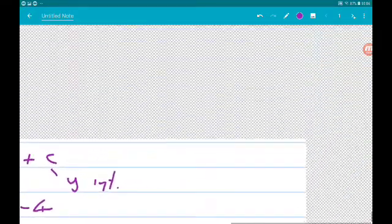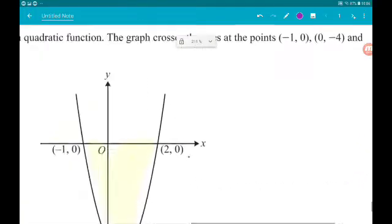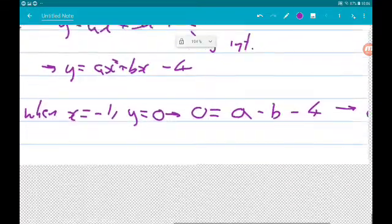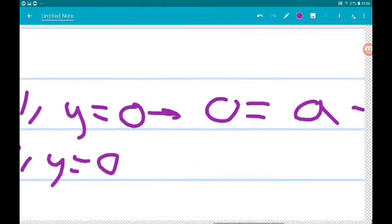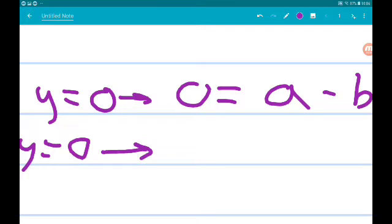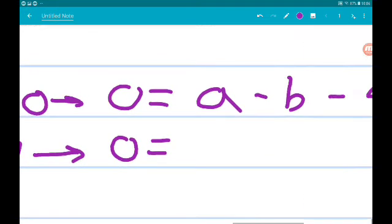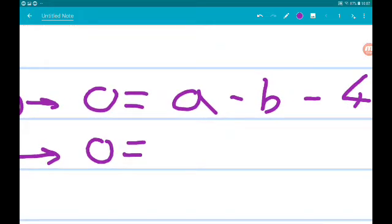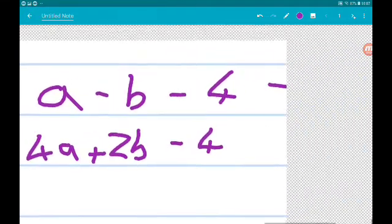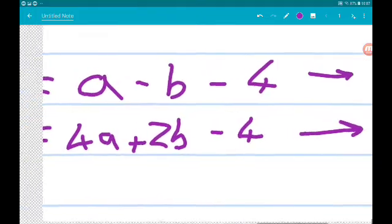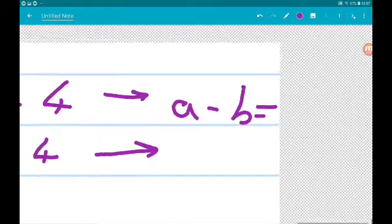Okay, so if we do that with the other x-intercept, we know that when x is 2, y is 0. That gives us 0 equals a times 2 squared, so 4a, plus b times 2, so 2b minus 4. Now, that tells us that 4a plus 2b equals 4.